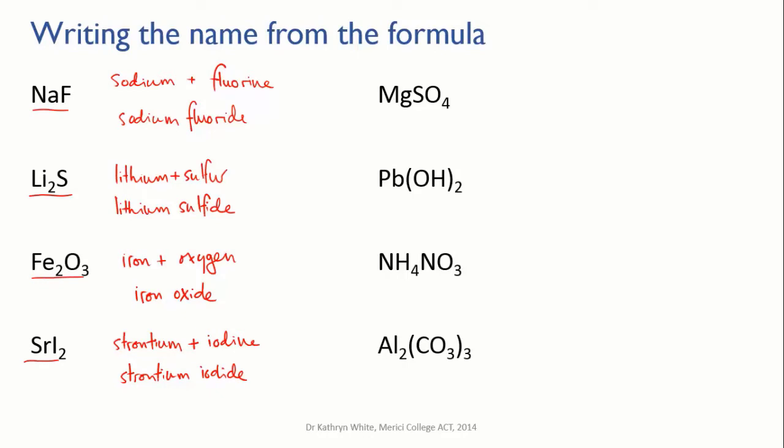Those four were all ionic compounds using monatomic ions. In three of them, you can see that some ions occur more than once. In lithium sulfide, for instance, you've got two lithium ions to every one sulfide ion. In iron oxide, you've got two iron ions to every three oxygen ions. We'll get into how you work that out in a little while.